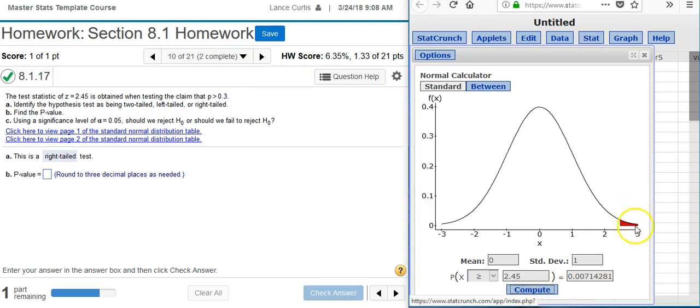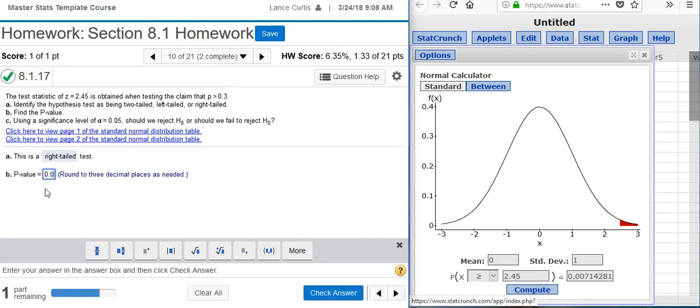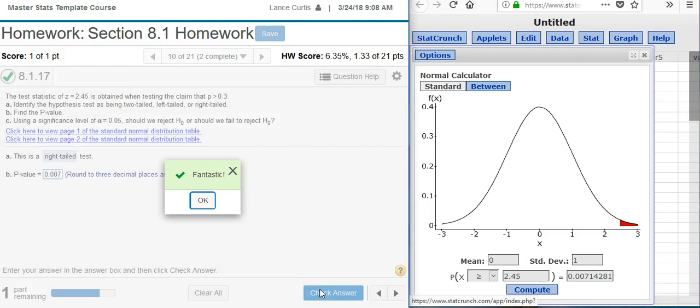And this area underneath the curve that's shaded in red on your normal calculator is this number here, 0.007. And that is the p-value. So I'm going to put that here in my answer field. Fantastic!